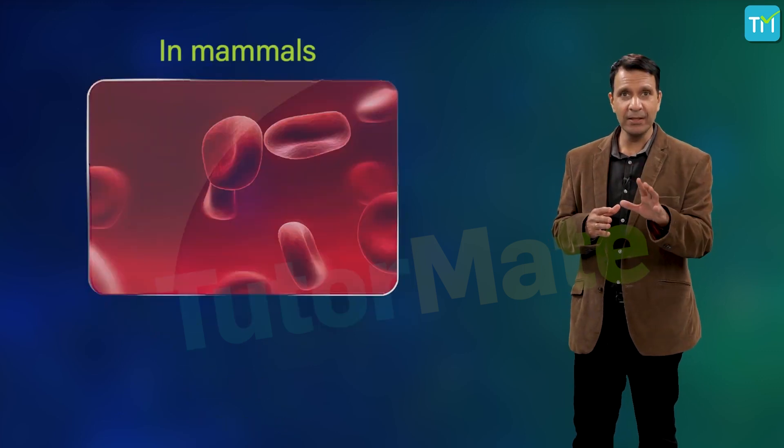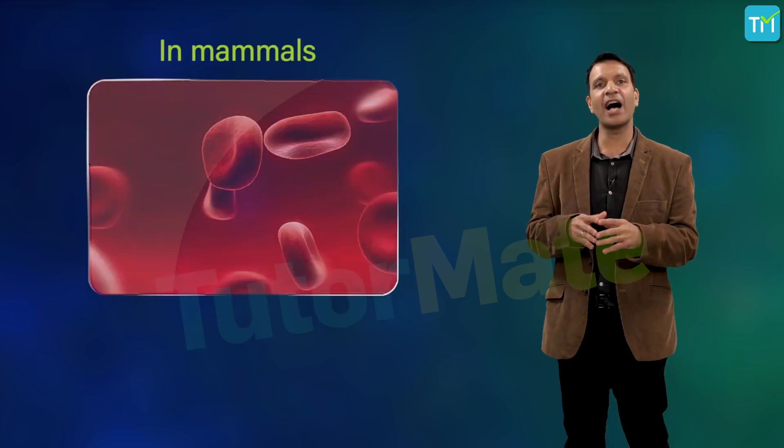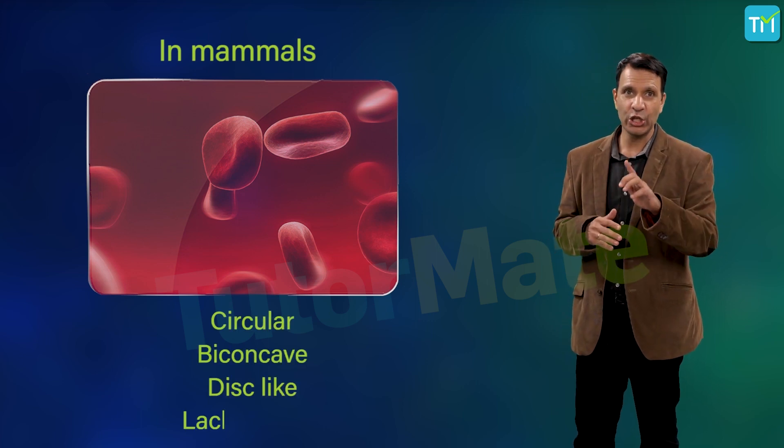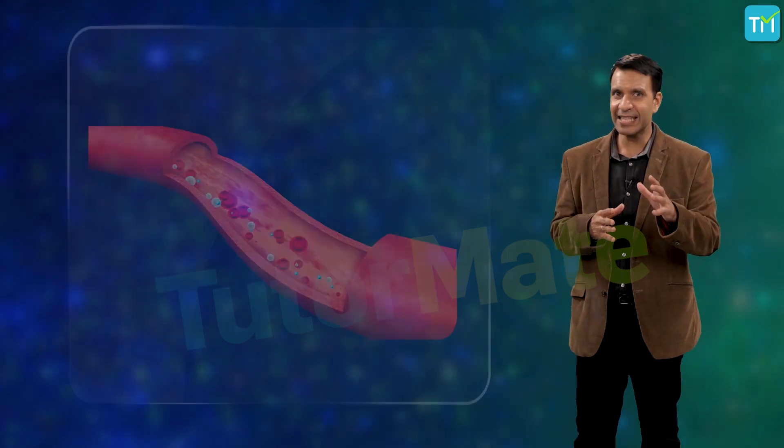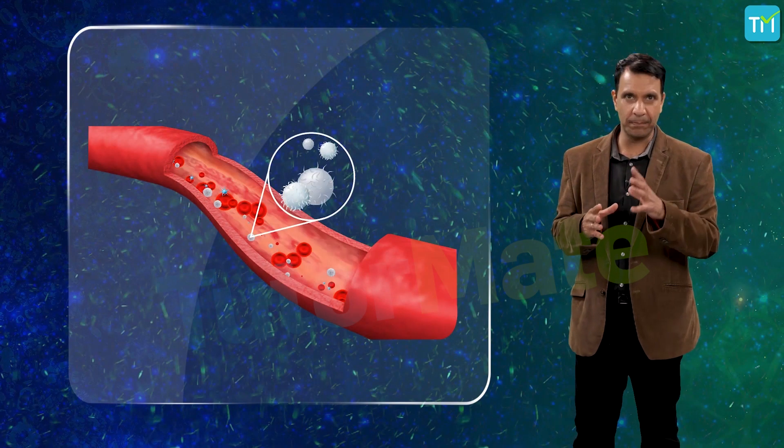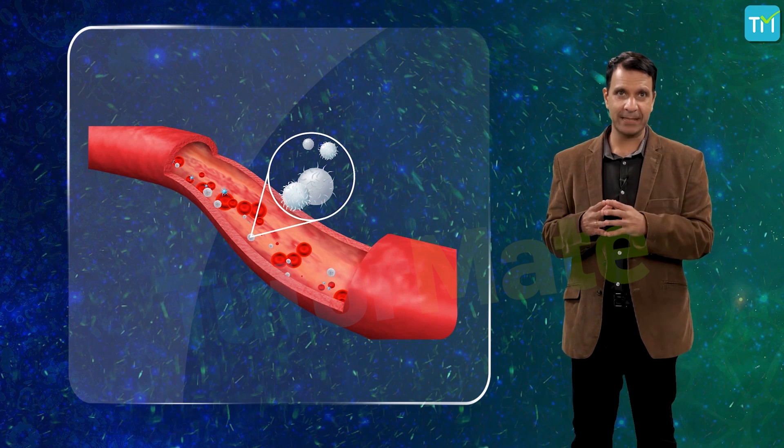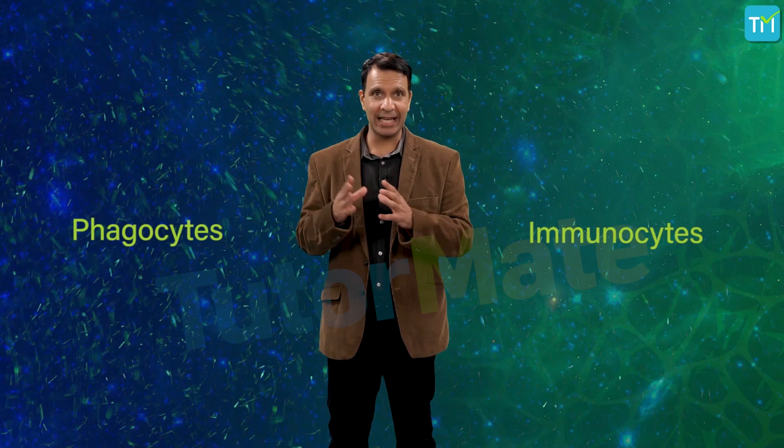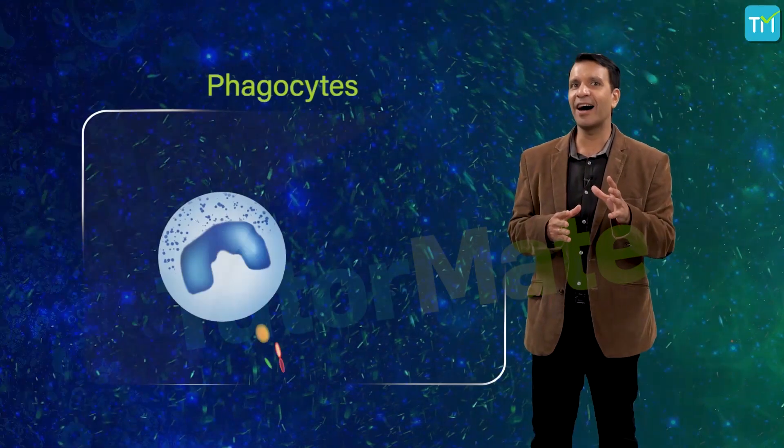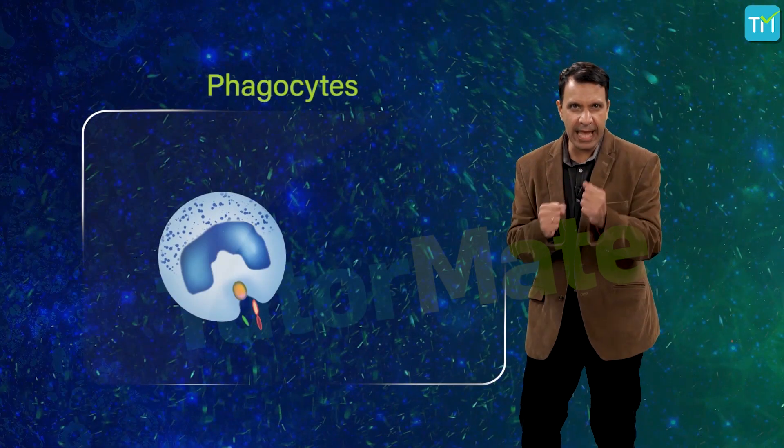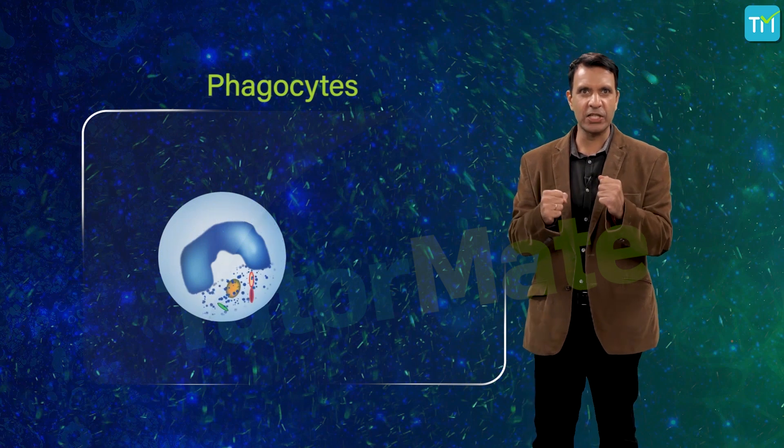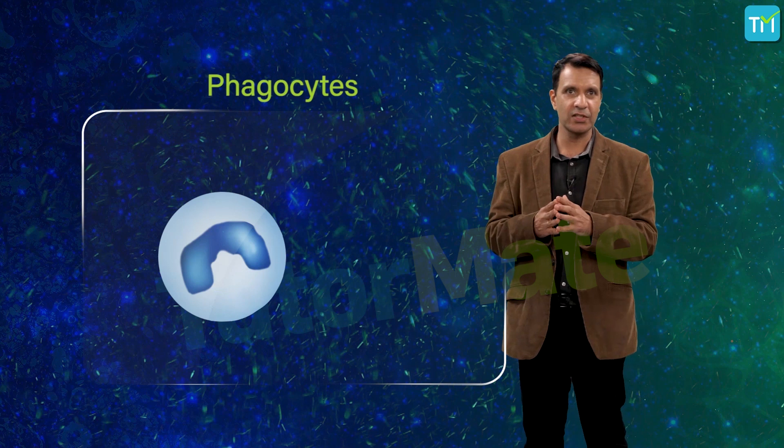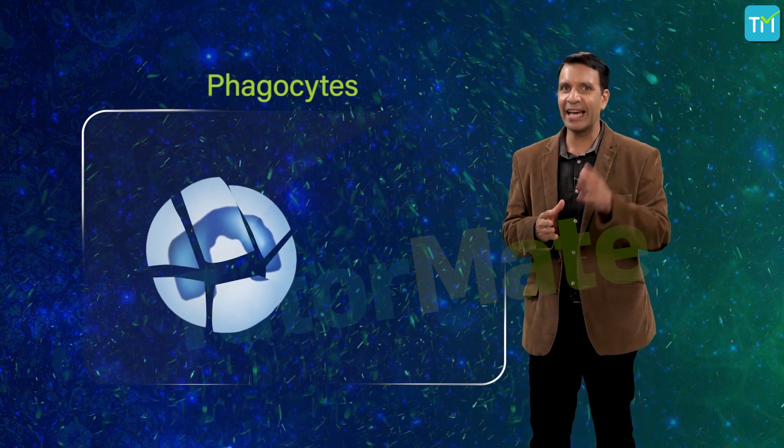Whereas in mammals, the red blood cells are circular, biconcave, disc-like, and lack nucleus. Next, let's discuss white blood cells or leukocytes. There are two types: phagocytes and immunocytes. Phagocytes are the defense cells—they carry out the function of body defense by engulfing the bacteria and other foreign substances.